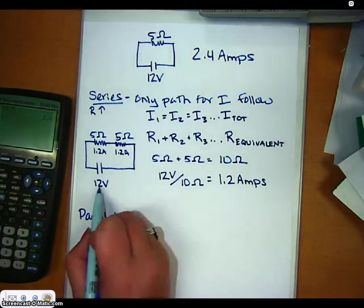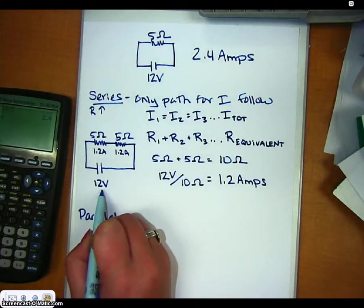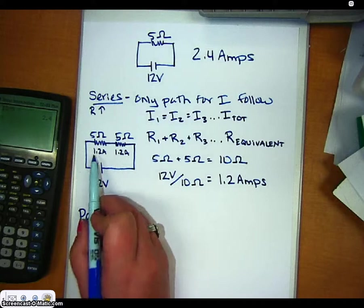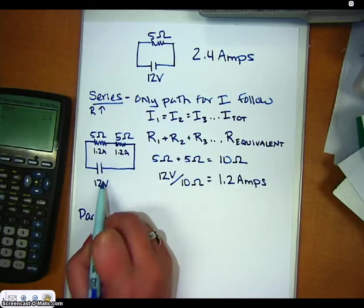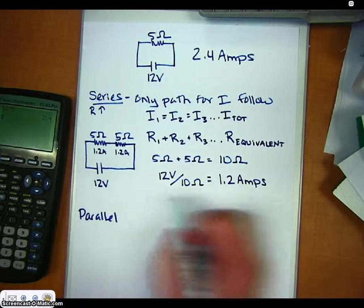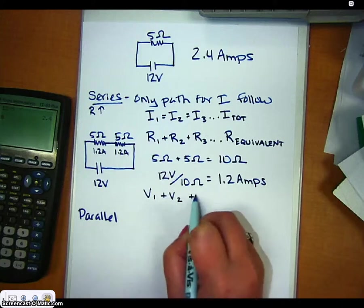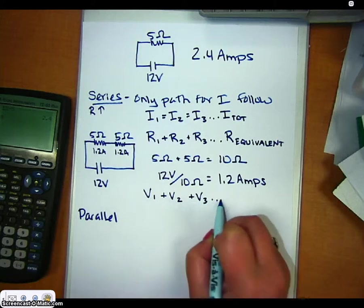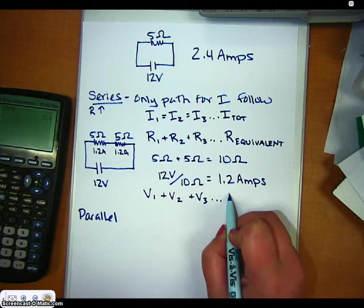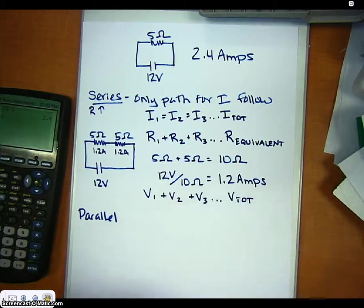Now, the source is 12 volts. So at every position, each resistor, this voltage actually gets shared. So the math for that would say that the voltage of one plus the voltage at another plus the voltage at another is all going to equal the total voltage of the source.